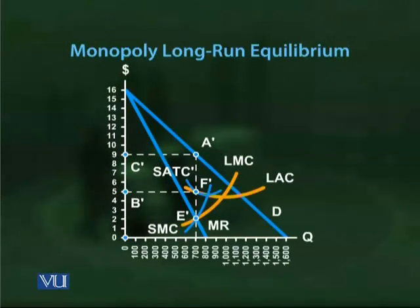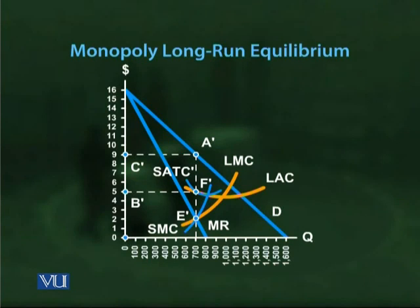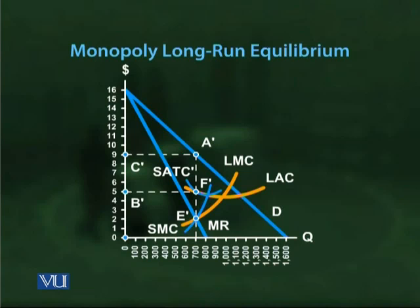For monopoly long-run equilibrium, the long-run marginal cost curve cuts the marginal revenue curve at point E', where quantity produced and sold equals 700 units. The corresponding price is $9 per unit (point C') and average cost is $5 per unit (point B'). Profit per unit is $9 − $5 = $4. Multiplying by 700 units gives maximum long-run profit of $2,800. In the short run, profit was $1,500, but in the long run the firm earns economic profit of $2,800.